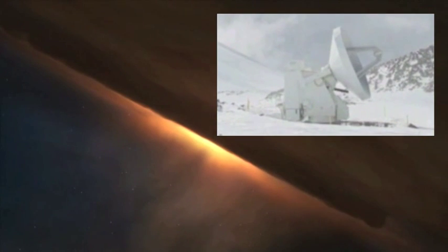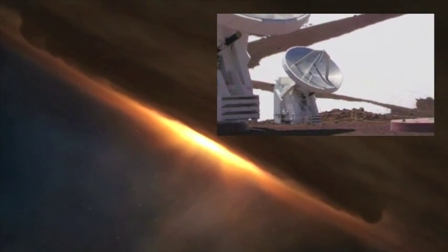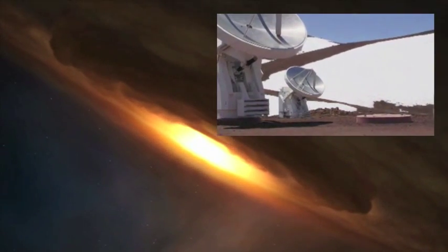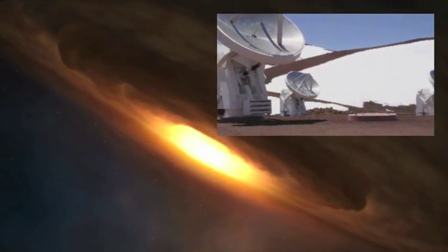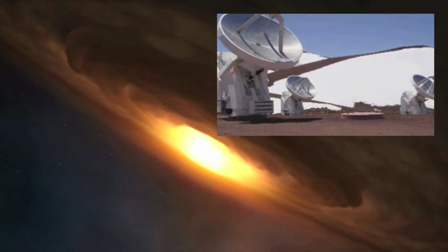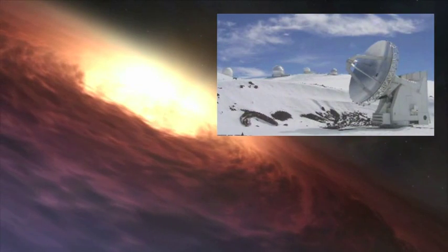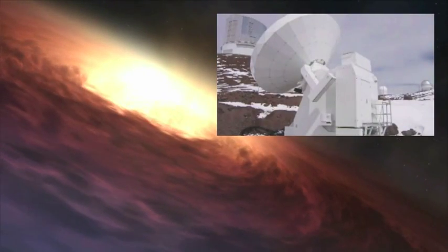Gathering the data of four campaigns between March 2008 and February 2009, the CSO network was oriented toward the APM 08279 plus 5255 quasar in order to measure the amount of water spinning around this hideous object dreadfully old and bright.